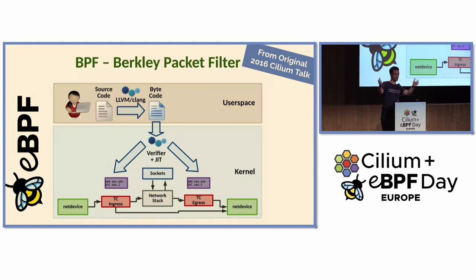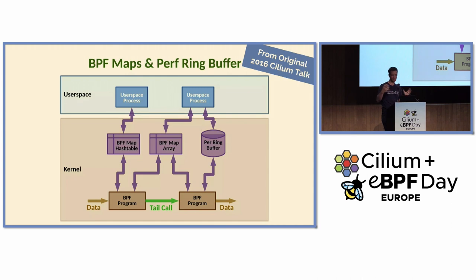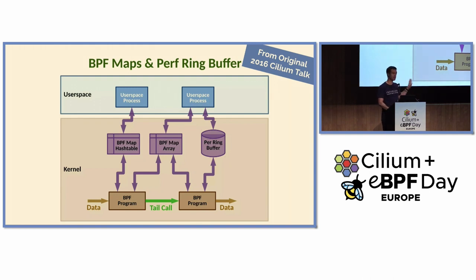BPF is not just extensibility — it's also a tremendously good engine for visibility. We have perf ring buffers and BPF maps, so we can extract observability from the data path, from what is running in the kernel, into user space. And this is what led to Hubble.